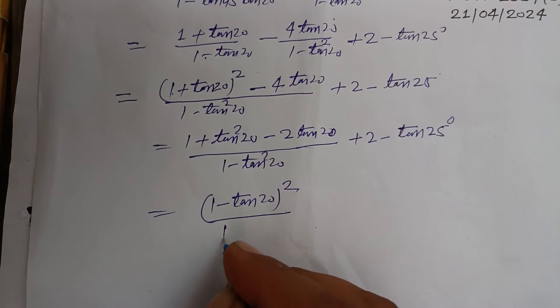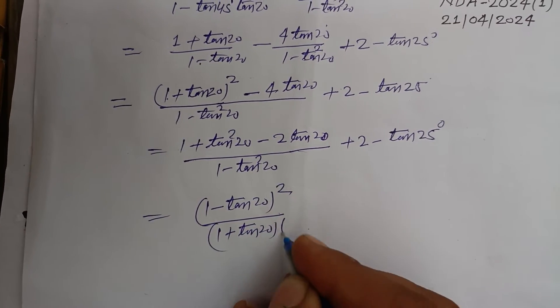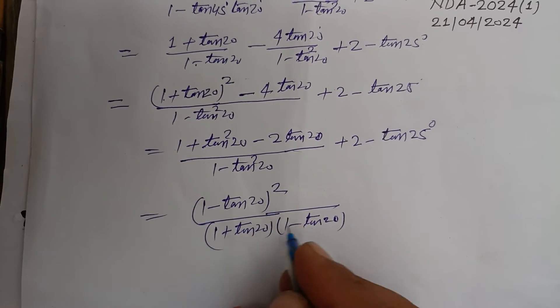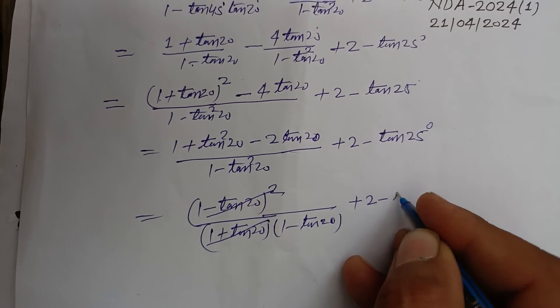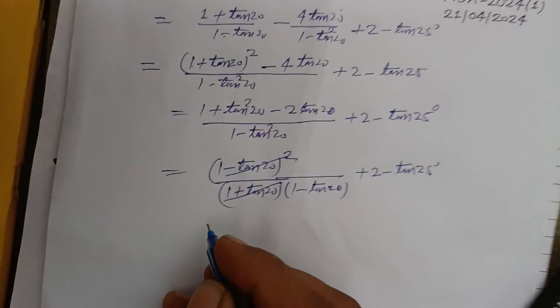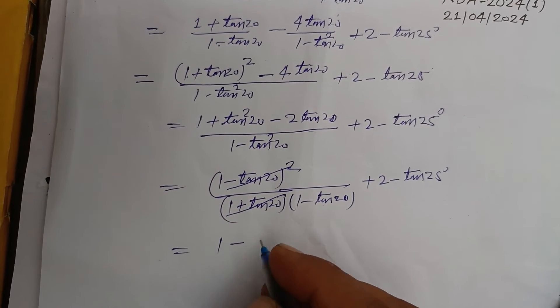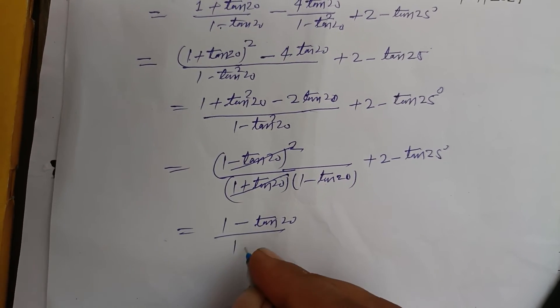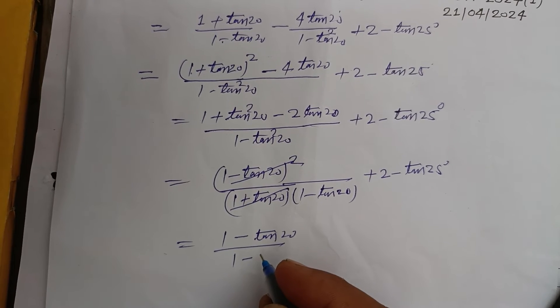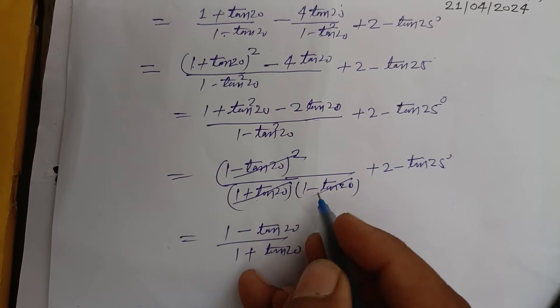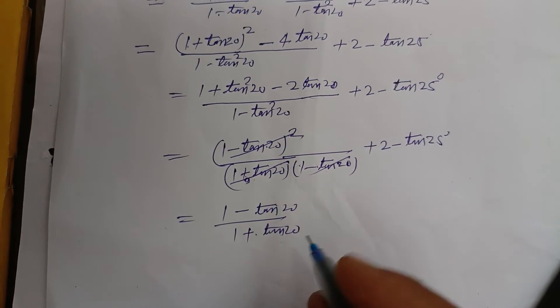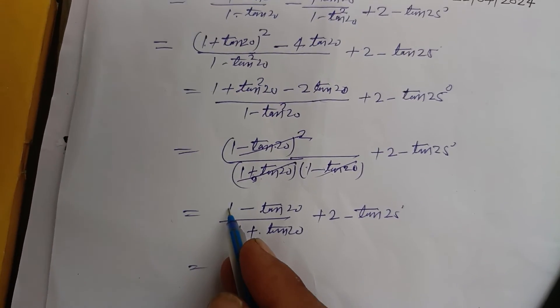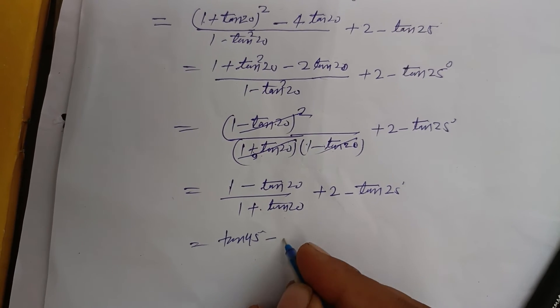This becomes 1 + tan²20° - 2tan20°, which is (1 - tan20°)². Using (a - b)², this is (1 - tan20°)/(1 - tan20°), which equals 1. Writing 1 as tan45° - tan25°, plus 2 minus tan25°.